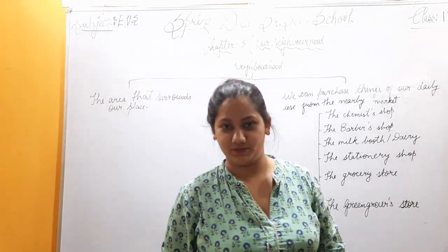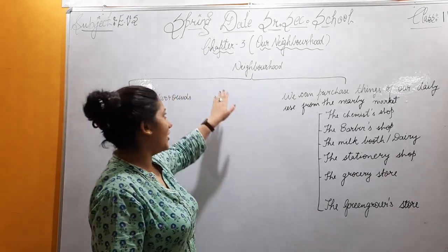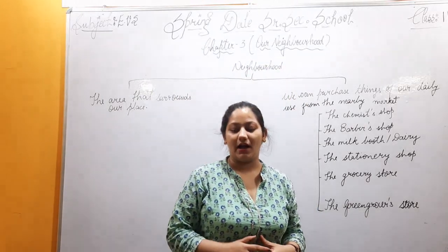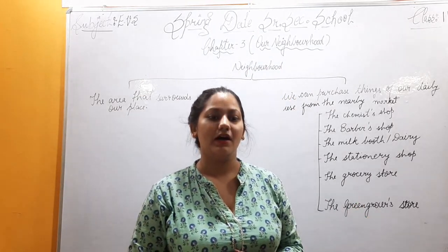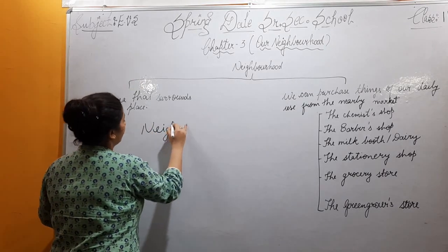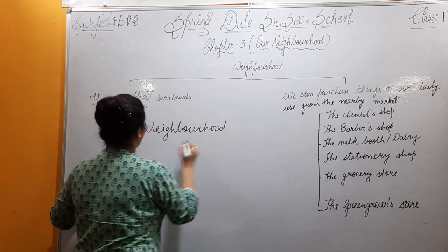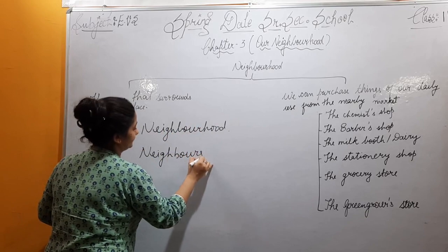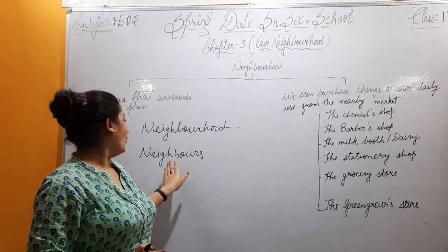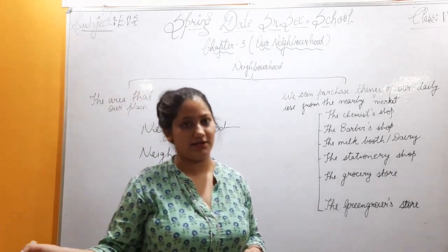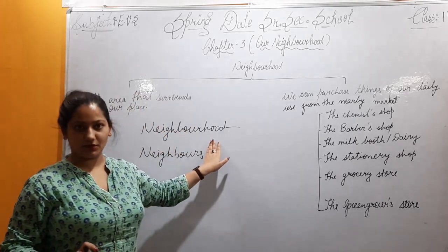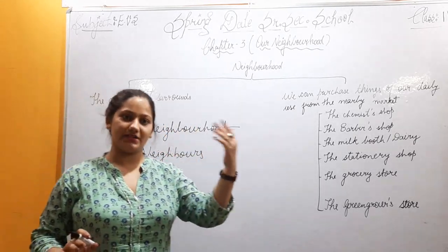Hello everyone, I hope you all are okay at your home. Today we will start Chapter 3 of EVS: Our Neighborhood. What is neighborhood? Neighborhood kya hota hai — when we are living, the area that surrounds us is called the neighborhood. Neighbors are the people next door to us. Jis area ke andar hum rah rahe hain usse hum neighborhood kehte hain, aur jo humare ghar ke paas wala hota hai use hum neighbors bolte hain.